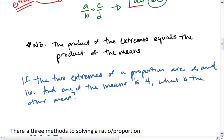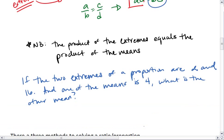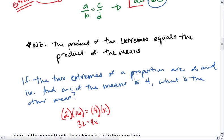Well, we set our two extremes on one side: 2 times 16, which equals the product of the two means — 4 and the unknown, which we'll write as x. We get 32 equals 4x. This tells us that the other mean must be 8.